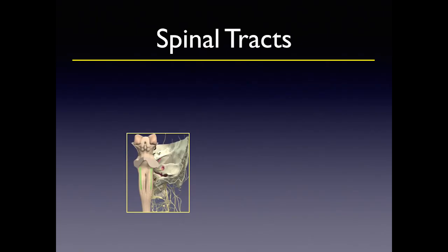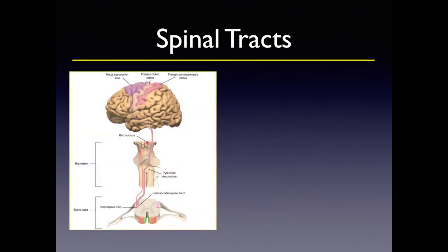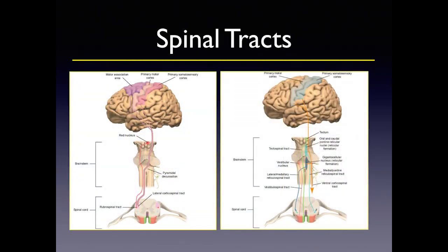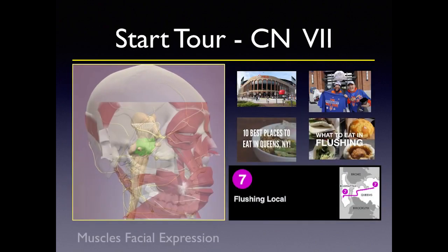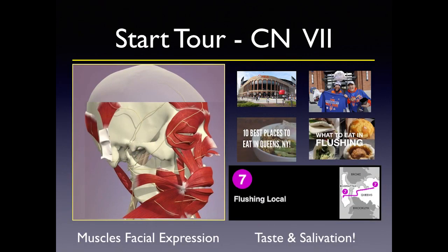If we take a look at those spinal tracts, they have the same organization — motor and sensory follow that same topographic appearance. Your ventral is motor and your dorsal is sensory. So if we look at the spinal tracts and start looking at our cranial nerves, we'll start our tour with cranial nerve 7.